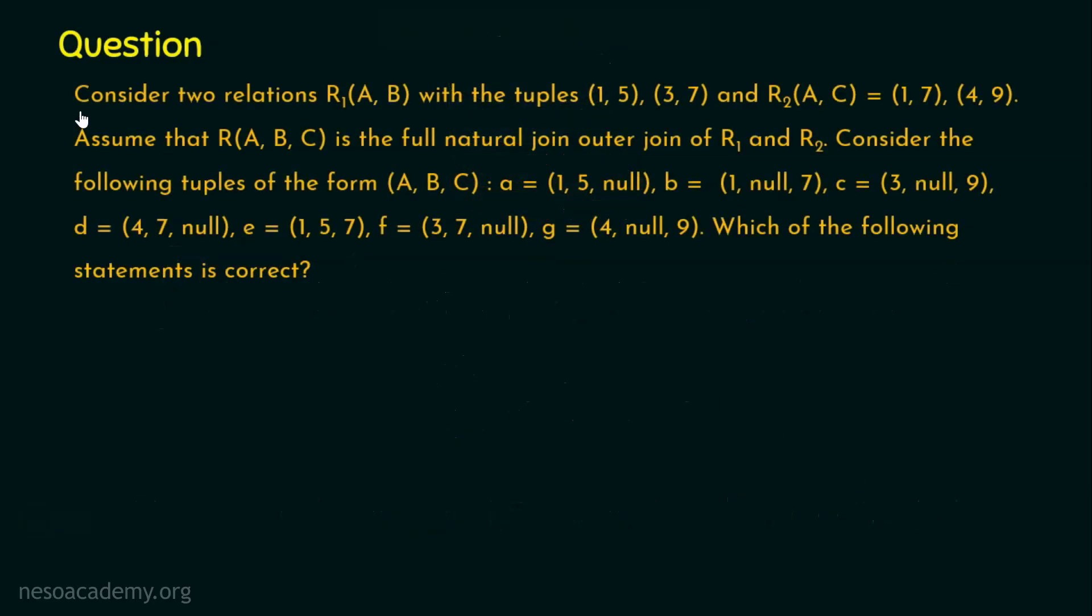The question is: consider two relations R1 with attributes A, B with tuples (1, 5) and (3, 7), and relation R2 with attributes A and C with tuples (1, 7) and (4, 9).